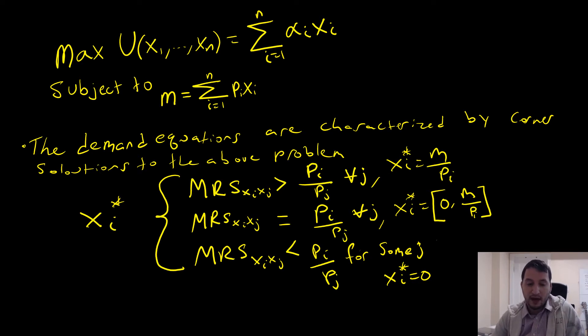And if our marginal rate of substitution is less than p_i over p_j for some j—meaning that we just need to find one good j where this holds—then we put nothing in this good i.